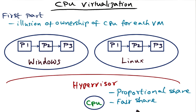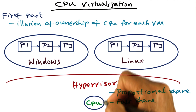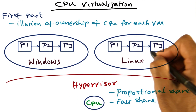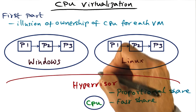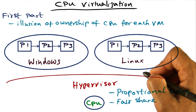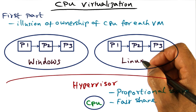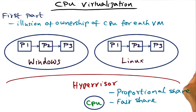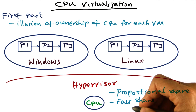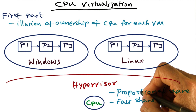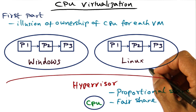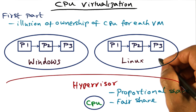Another approach is to use a fair share scheduler, which gives a fair, equal share of the CPU to each of the guest operating systems running on top of the hypervisor. Both of these strategies — the proportional share scheduler and the fair share scheduler — are straightforward conceptual mechanisms, and you can learn more about them from the assigned readings for this course.